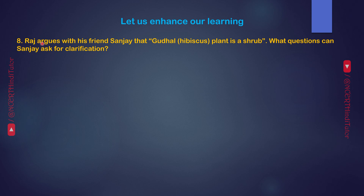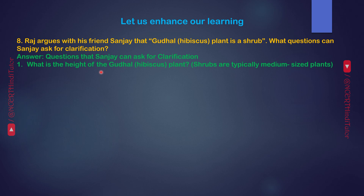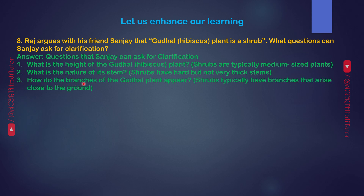Question 8. Raj argues with his friend Sanjay that the Gudhal hibiscus plant is a shrub. What questions can Sanjay ask for clarification? Answer. Questions Sanjay can ask: First, what is the height of the Gudhal hibiscus plant? Shrubs are typically medium-sized plants. Second, what is the nature of its stem? Shrubs have hard but not very thick stems. Third, how do the branches of the Gudhal plant appear? Shrubs typically have branches that arise close to the ground. Fourth, is the stem of the Gudhal plant woody? Shrubs often have woody stems.